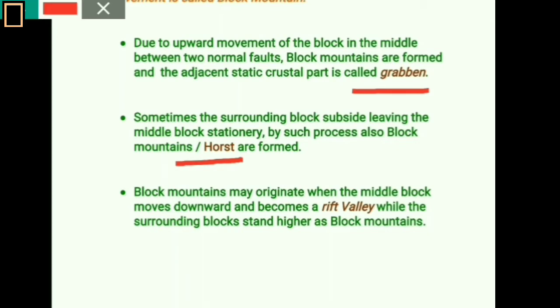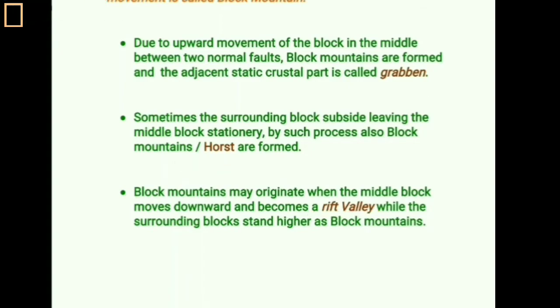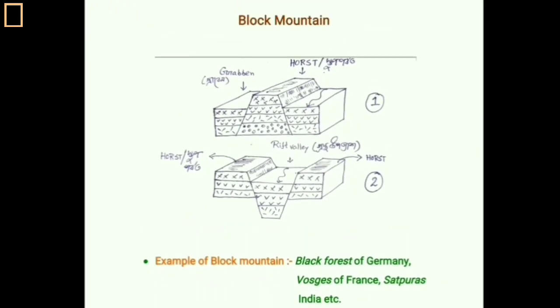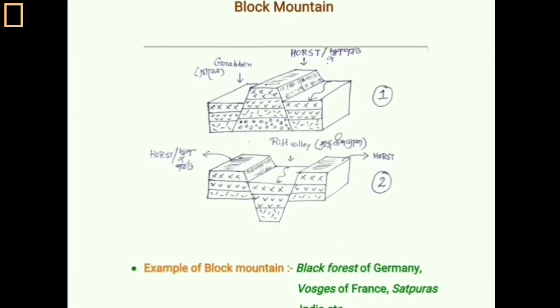In the third process, the middle one of the two parallel faults subsides vertically, forming a rift valley. The middle part which has subsided is known as the rift valley, and the remaining two adjacent areas which are static or up-thrust are known as the block mountains.